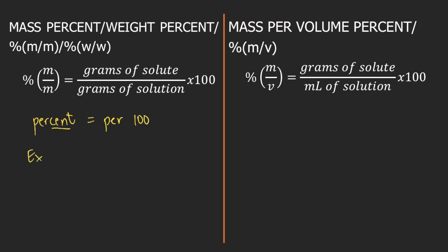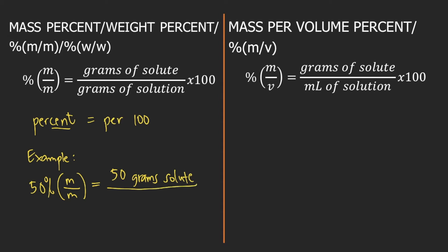For example, if you are given 50 percent by mass, this means 50 grams of solute per 100 grams of solution. Okay, that's mass percent.